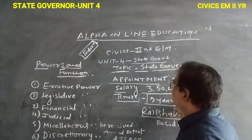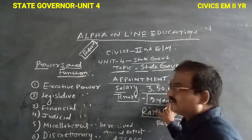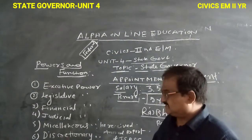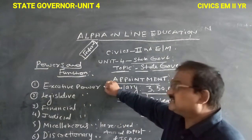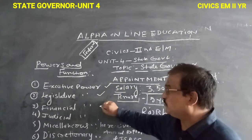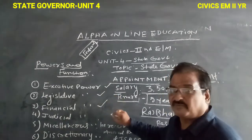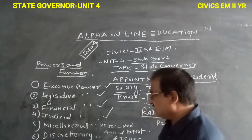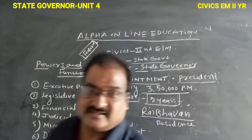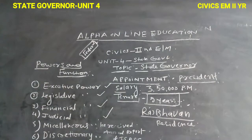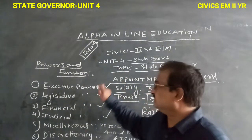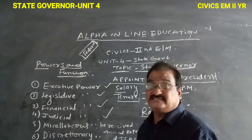Now we look at the powers and functions of the state Governor. There are six powers: executive power, legislative power, financial power, judicial power, miscellaneous powers, and discretionary powers.